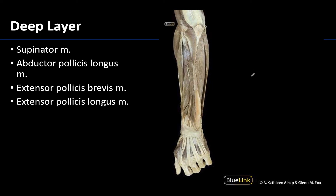Moving to the deep layer — there is no intermediate layer in the posterior compartment. There are five muscles here but we will focus on four. Superior in this region is a fairly wide muscle called the supinator. It is not visible unless the superficial layer muscles have been removed or reflected. The supinator does not get close to the wrist joint, and as its name suggests it supinates at the radioulnar joints.